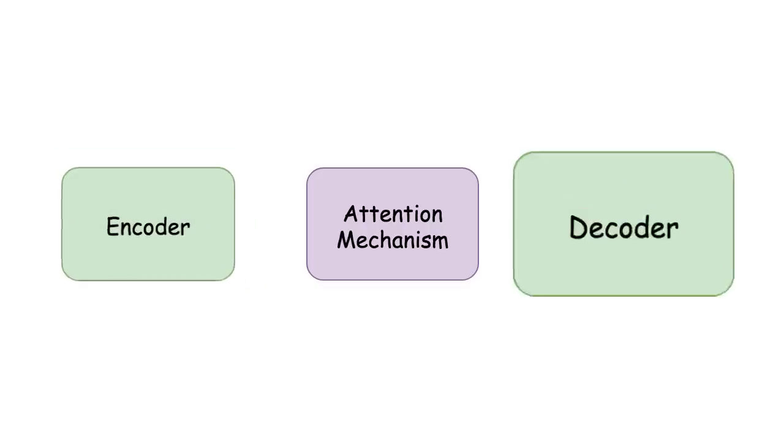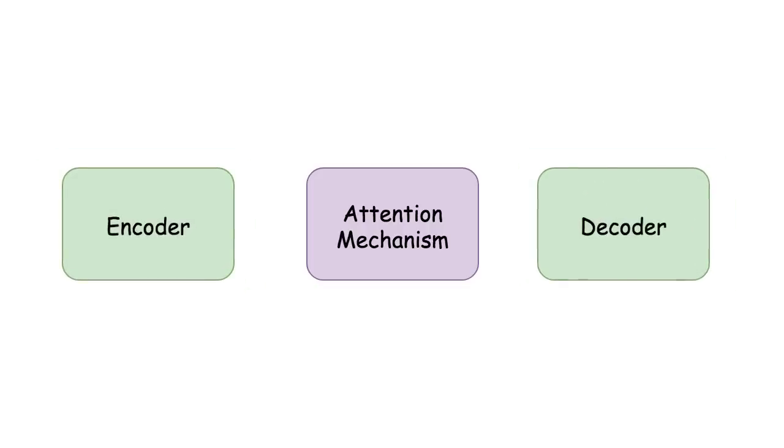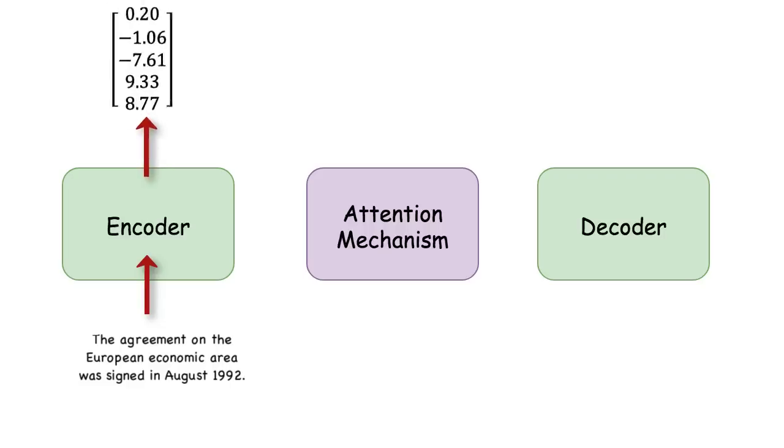This alignment is learned by an extra unit called an attention mechanism, and it sits between the encoder and decoder. So during translation, an English sentence is fed to the encoder. It's encoded into some vector, which is just numbers the computer understands. It's basically the same English sentence in the computer's eyes.